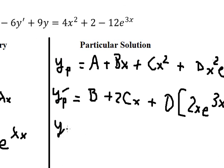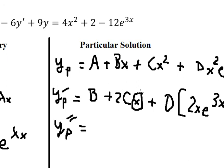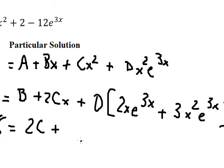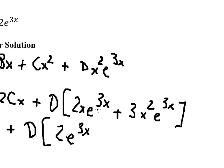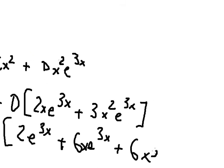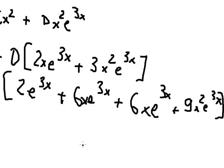For the second derivative of yp: the constant gives 0, Bx gives 0, Cx² gives 2C. For the D·x²·e^(3x) term we differentiate again using the product rule, yielding 2e^(3x) plus 6x·e^(3x) from the first part, and 6x·e^(3x) plus 9x²·e^(3x) from the second part. Combining the 6x·e^(3x) terms gives 12x·e^(3x).